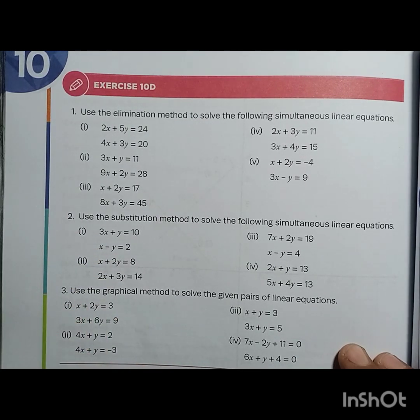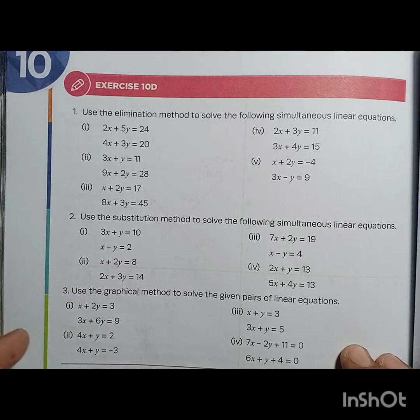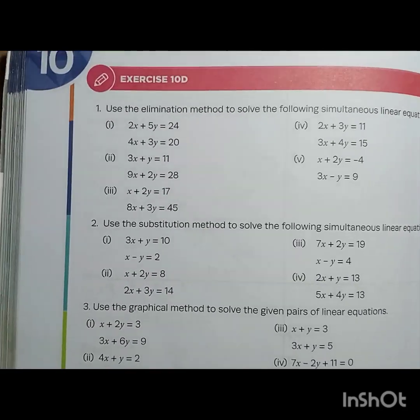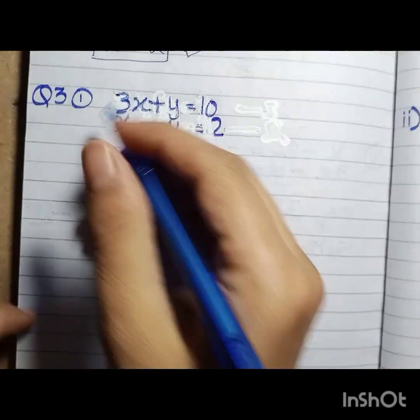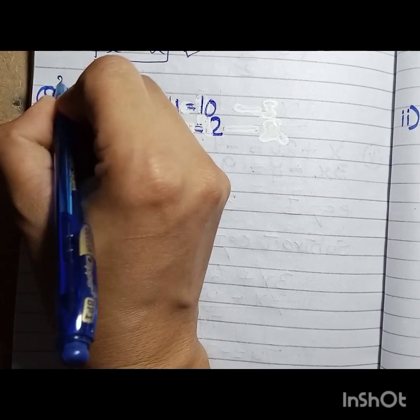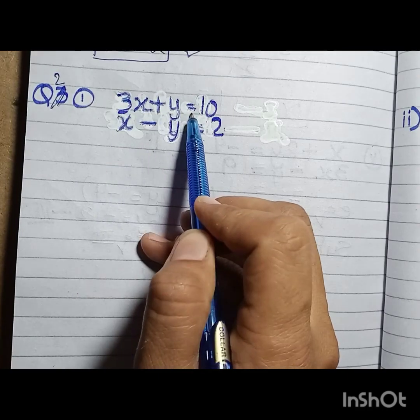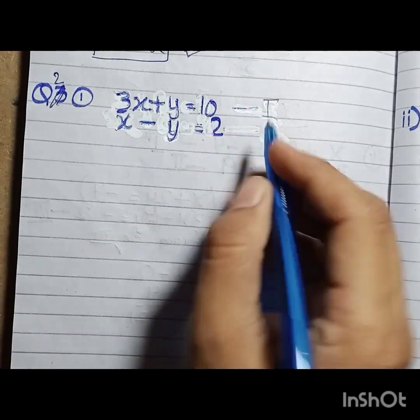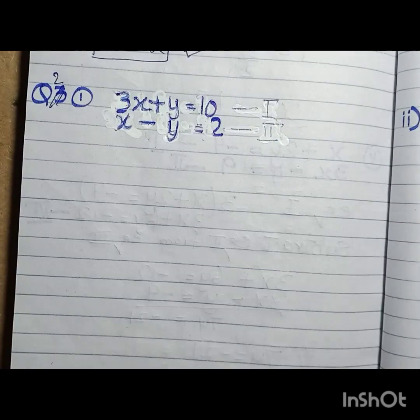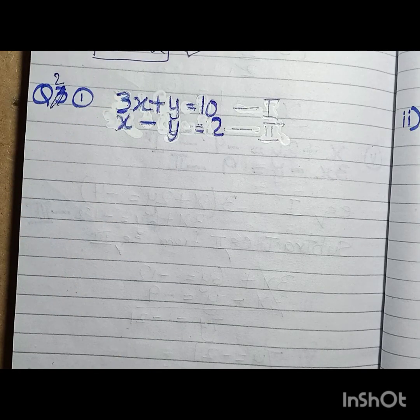What we have to do is find the same x and y values. We have some steps that we followed in question number 1, and in the same way we will use the same steps. First, 3x plus y is equal to 10 — we will call this equation 1. And x minus y is equal to 2 — we will call this equation 2.